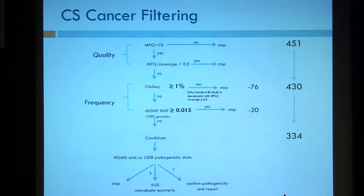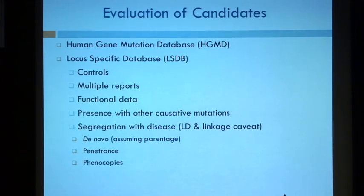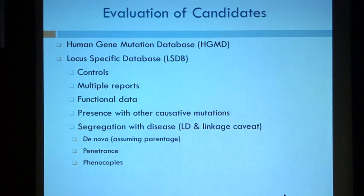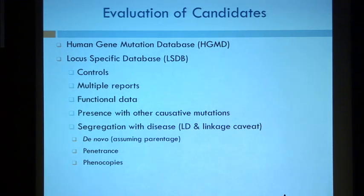We've taken out a third of our variants by frequency filtering, going from 451 down to 334. To evaluate these candidates you actually have to go out to the databases for each one. Whether you're using the Human Gene Mutation Database or locus-specific databases, you need to ask: Was this variant found in controls? Are there multiple reports of this variant, or is it only seen in one paper? Is there functional data, and do I believe it? Is it present with other causative mutations? All of these things add evidence for or against the variant being causative.